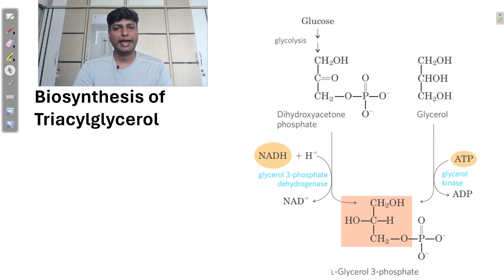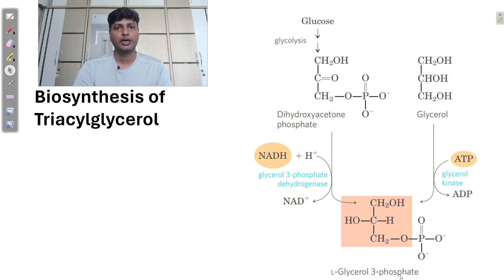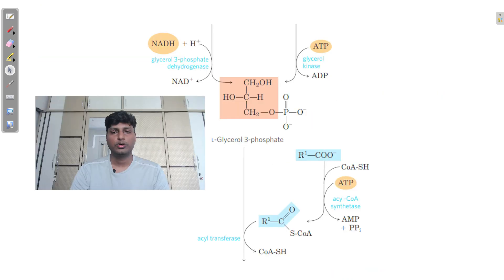Alternatively, the cell can directly convert glycerol into glycerol-3-phosphate. So first, there is formation of glycerol-3-phosphate, and then a particular fatty acid is attached to it, resulting in the formation of mono-, di-, or triacylglycerol depending on the number of fatty acids attached.